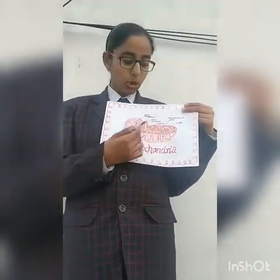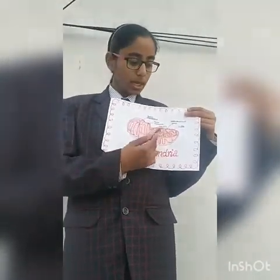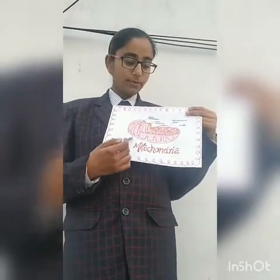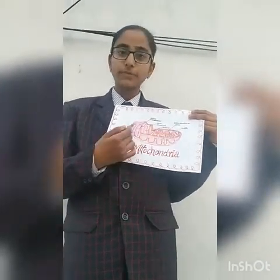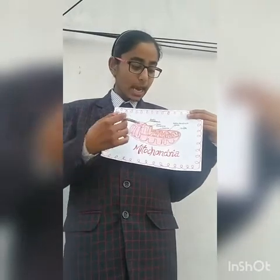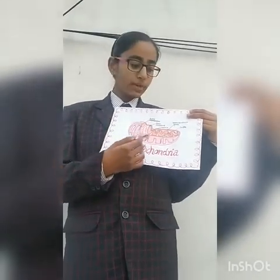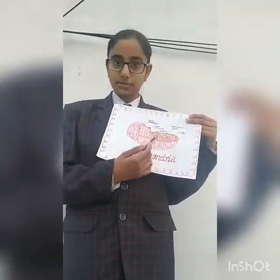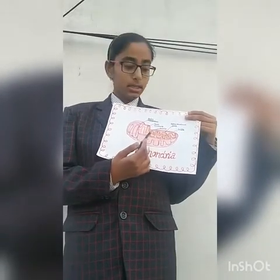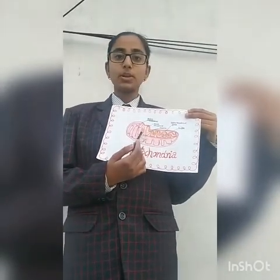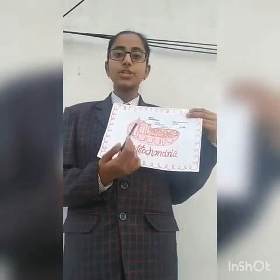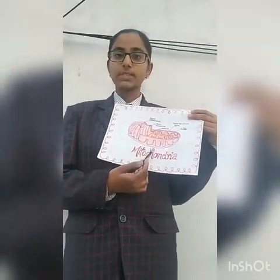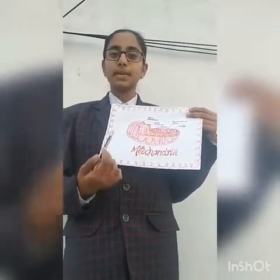The inner compartment is called the matrix. The outer membrane forms the continuous limiting boundary of the organelle, and the inner membrane forms a number of infoldings called the cristae, which increase the surface area. The mitochondria produces cellular energy in the form of ATP, and hence it is called the powerhouse of the cell. It divides by fission.